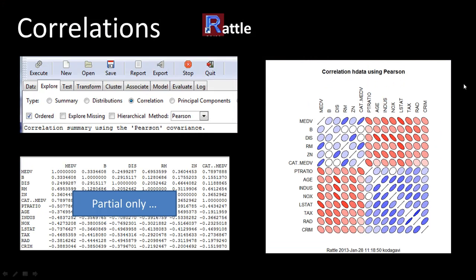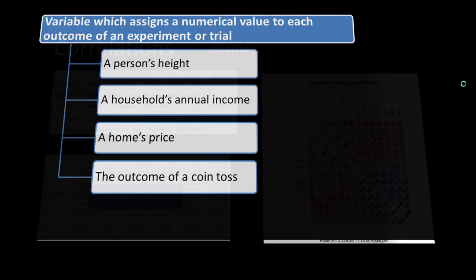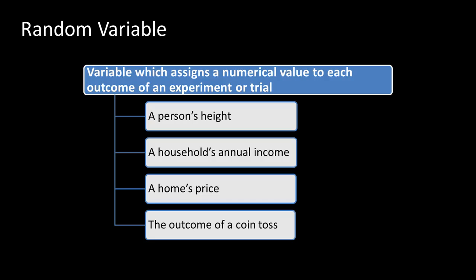Now let's look at some concepts of probability distributions. In probability distributions, we talk about random variables. A random variable doesn't mean completely random — it means a variable whose values can vary. It's a random variable because it takes on many different values. For example, the height of people, household annual income, a home's price, or the outcome of a coin toss — these are all random variables because they can take on multiple different values, and we're often interested in predicting a value.